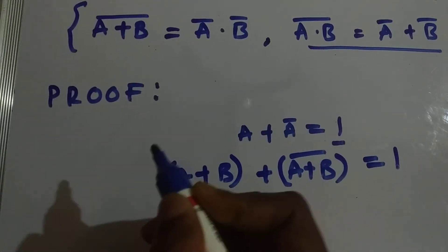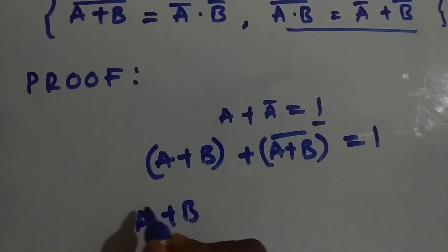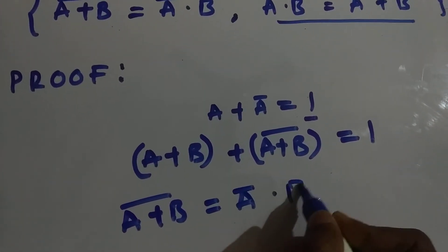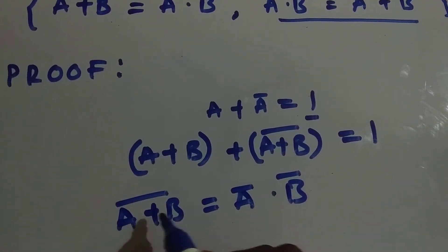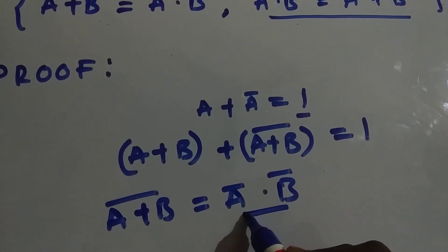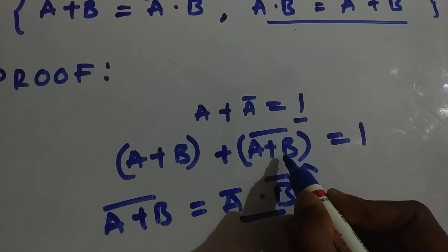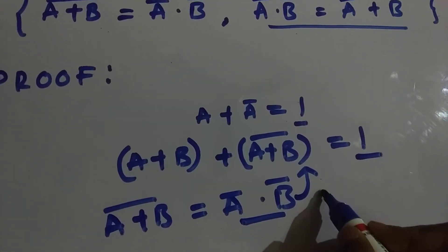From De Morgan's law we know that A plus B whole bar equals A bar dot B bar. So if we substitute this A bar dot B bar in the place of A plus B whole bar, and the result equals 1, then this statement is correct.